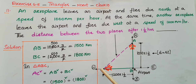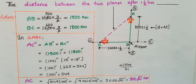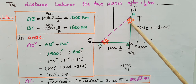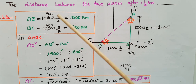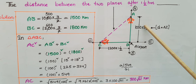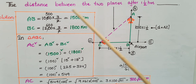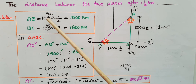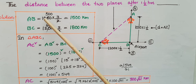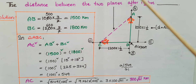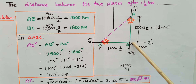We have to find the AC value. First, the distance travelled by the first aeroplane in 1.5 hours: distance = speed × time = 1000 × 3/2 = 1500 km. So AB is 1500 km.